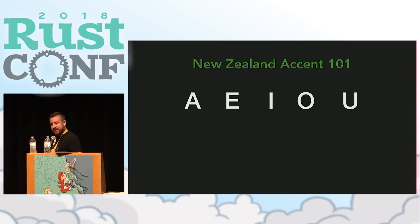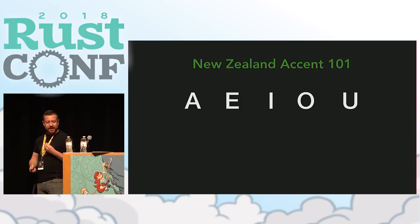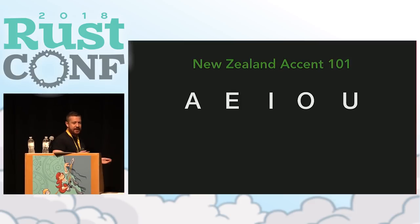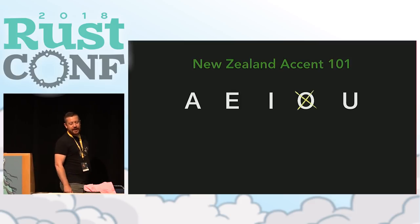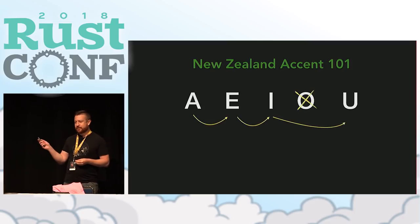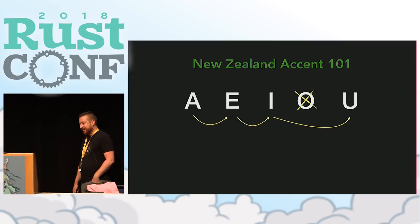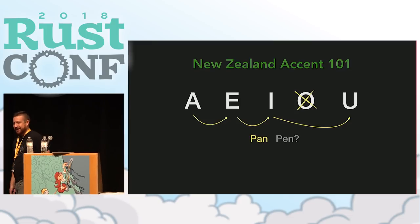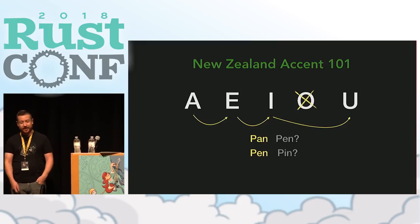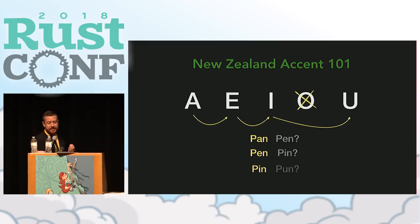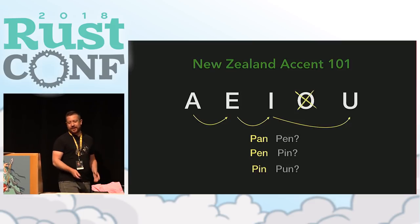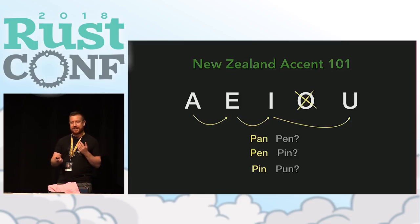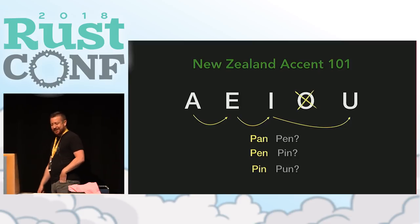I've been told that my accent's hard to understand, so I thought I would start off by giving a little bit of a 101 on the New Zealand accent. Essentially, if you take the vowels, take out the O, and move the sounds of the vowels over one, that's the New Zealand accent. So if I say 'pan' you might hear 'pen', and if I say 'pen' you might hear 'pin'. So if you're hearing the word in yellow, you're going to be good, but if you're hearing the word on the right, you may need to reverse engineer what I'm saying.